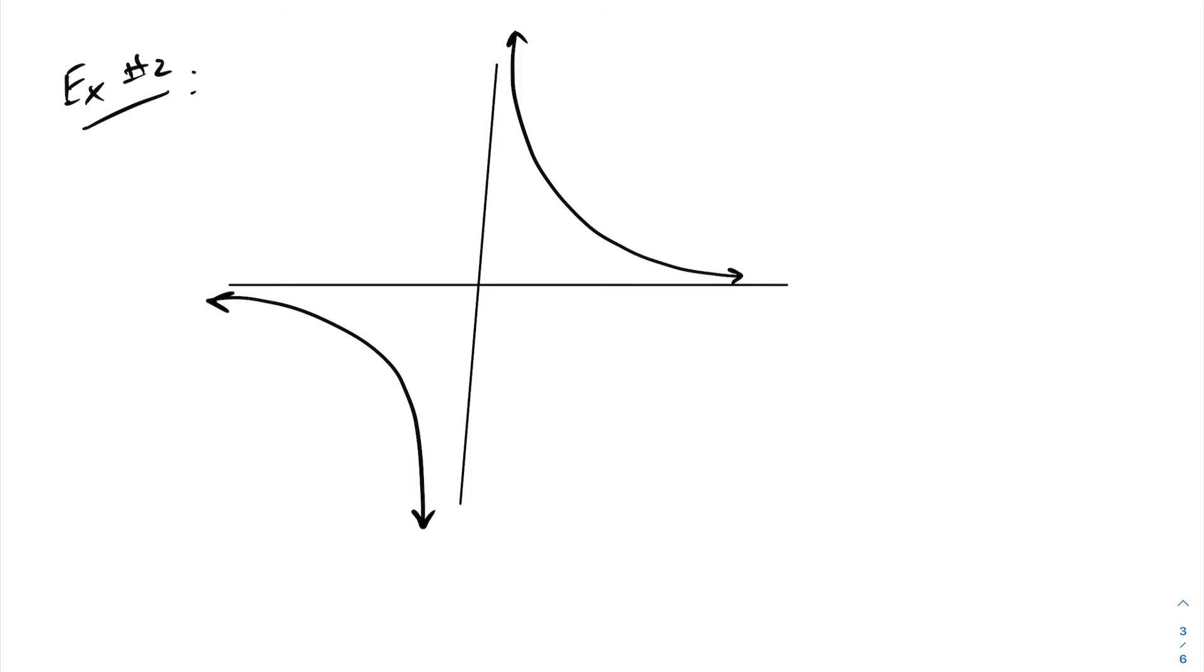So in this situation here we have a point of discontinuity at x equals 0. And just to summarize here, this is the reciprocal function that you've seen before, and we have a point of discontinuity at x equals 0 here. This is actually a vertical asymptote but still falls under the category of a point of discontinuity.